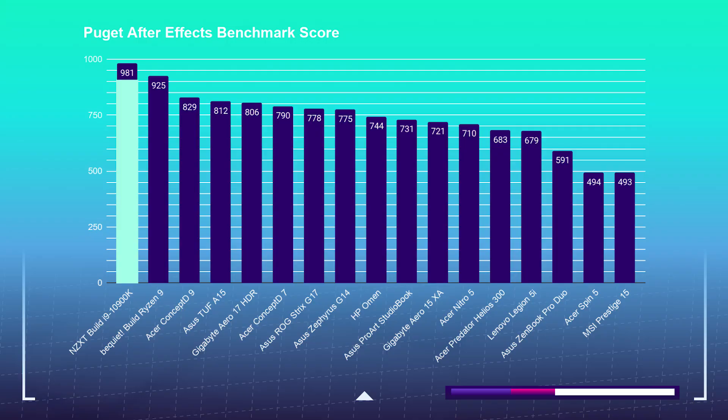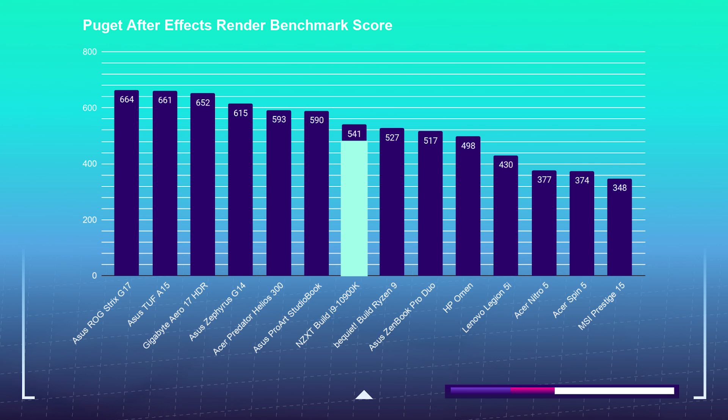For graphic design, this build will dominate. You will experience smooth workflows in Photoshop, InDesign, Illustrator, and other design applications such as Sketch, Affinity Suite, and Figma. It's one of the best scores I've seen in the Photoshop benchmark. Regarding motion design, I'm also using the Puget Systems After Effects and After Effects Render benchmarks to test these computers. On the standard After Effects test, the Intel i9-10900K snagged a 981, and for the render test, it scored a 541.